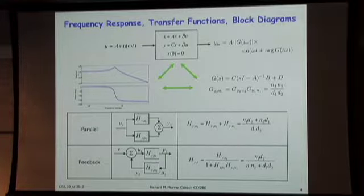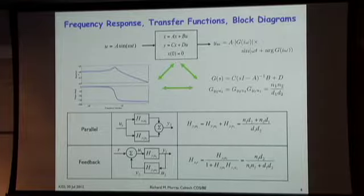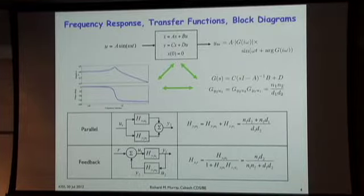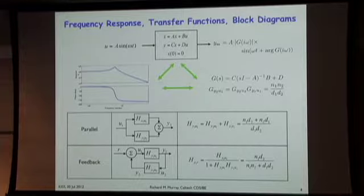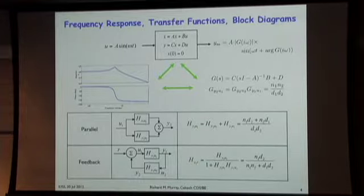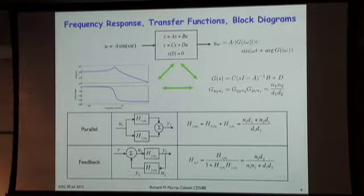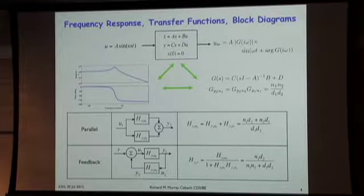A little bit of terminology: we often look at input-output systems described by linear differential equations. We have some input U, some output Y. We can represent systems in different ways—nonlinear differential equations, finite state automata, or others—but in traditional control theory, this is typically a linear input-output system written in state-space form: x-dot equals Ax plus Bu, y equals Cx plus Du. Think of X as a vector of states—position and velocity of a vehicle, for example. AX represents the internal evolution with no input; BU represents how applying a force changes the state. One very common thing we do is look at the response of systems to sinusoids at different frequencies—the frequency response.